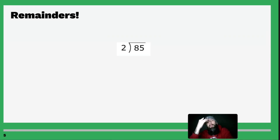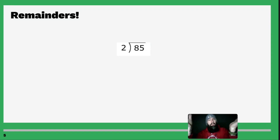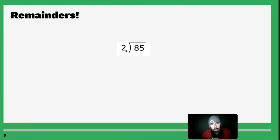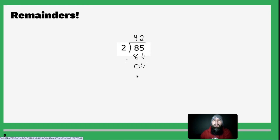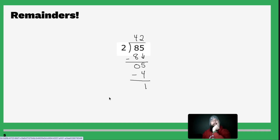Now let's talk about the fun world of remainders. We haven't run into a remainder yet, so let's talk about what it means. Repeat the process: 2 goes into 8 four times. Multiply 4 times 2 — that gets you 8. Subtract and you get 0. Bring down the 5. Two goes into 5 two times. Multiply 2 times 2 and that gets you 4.